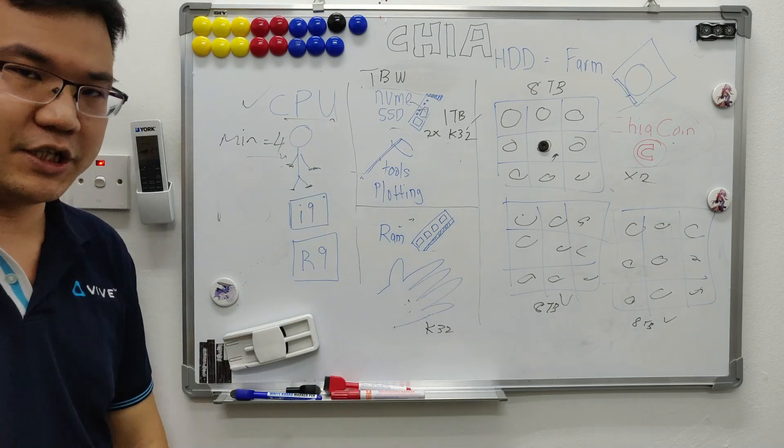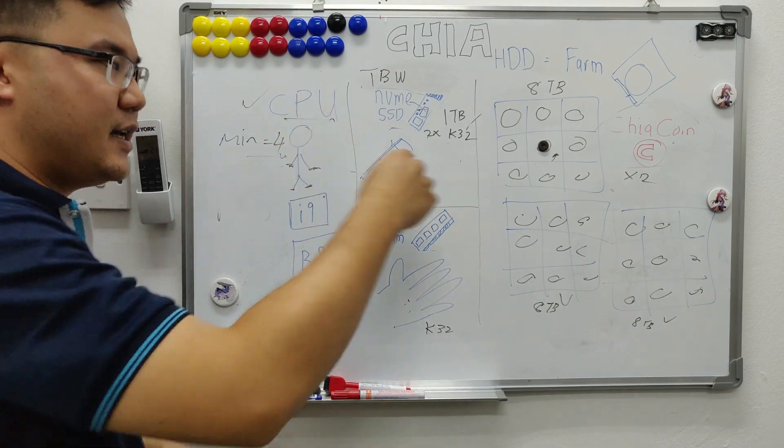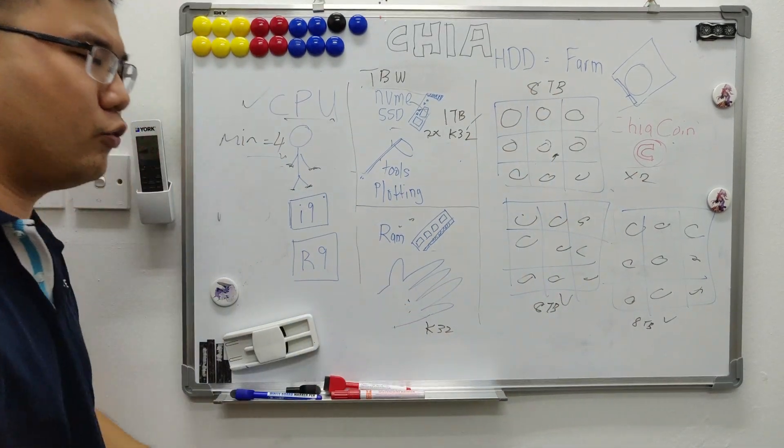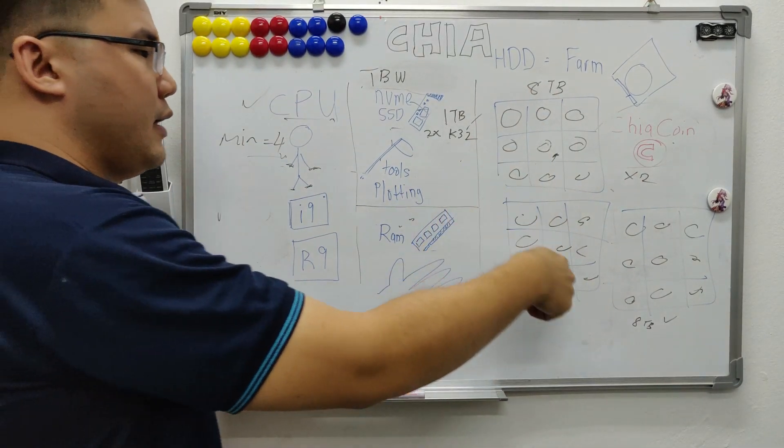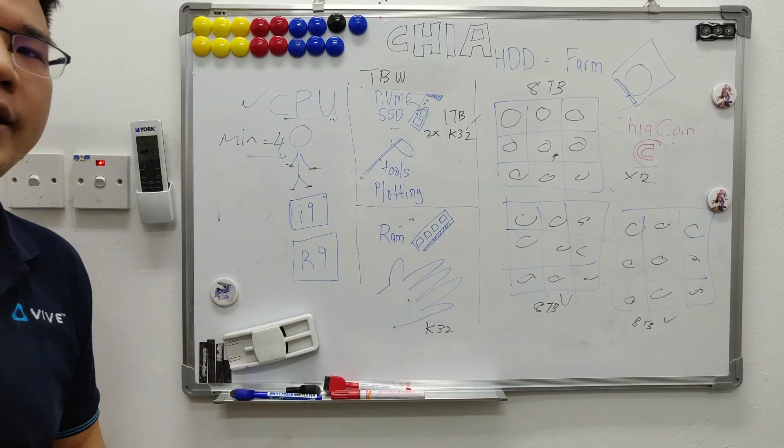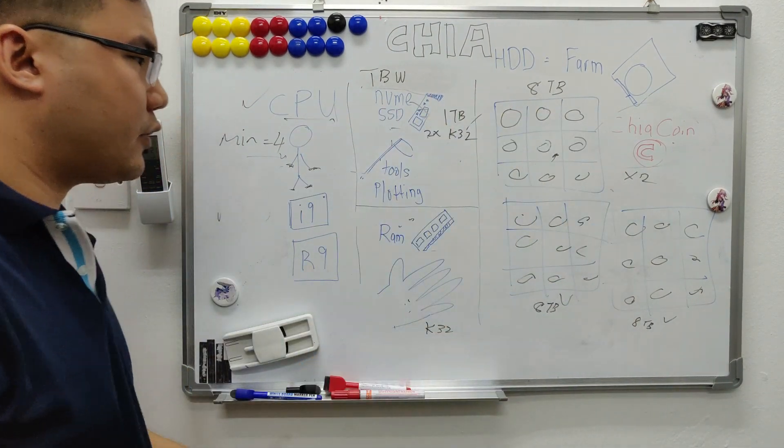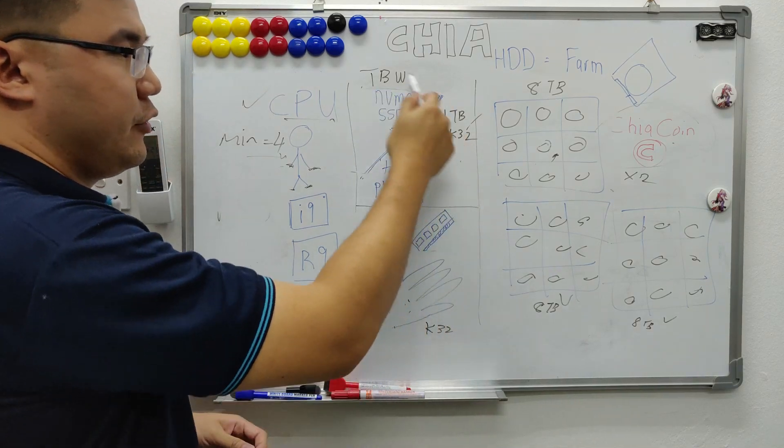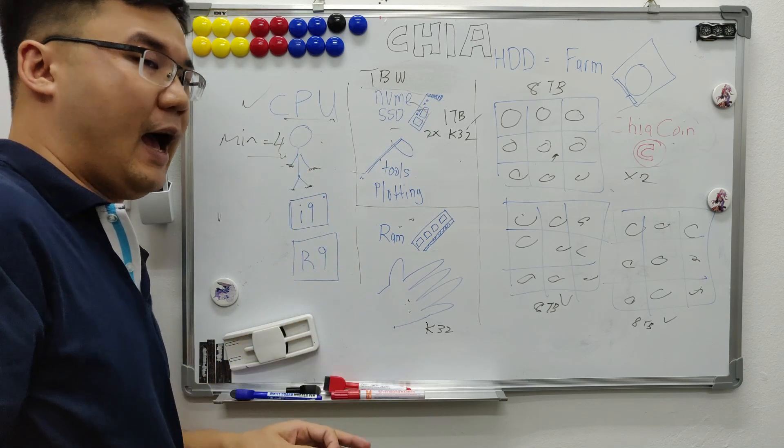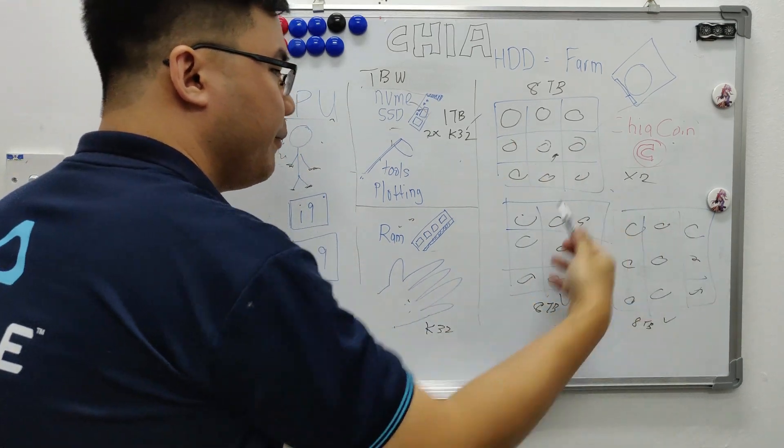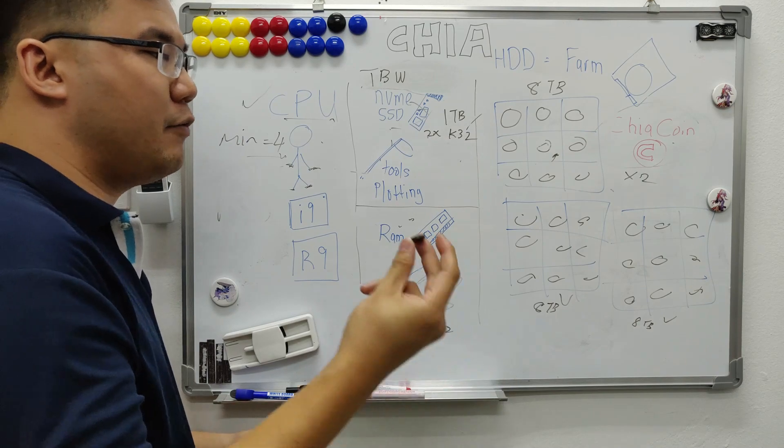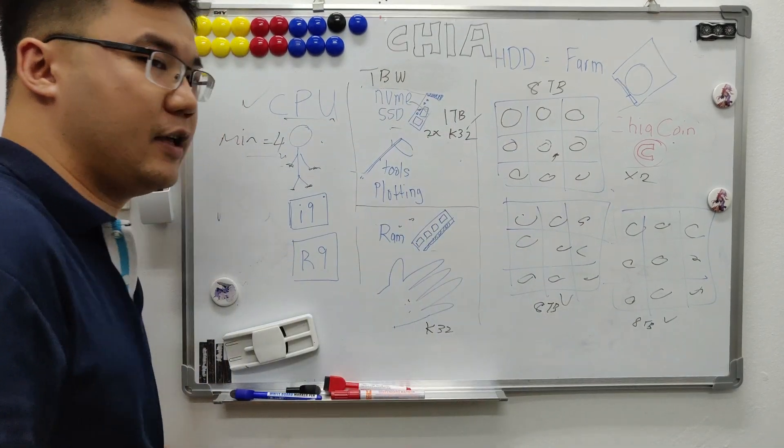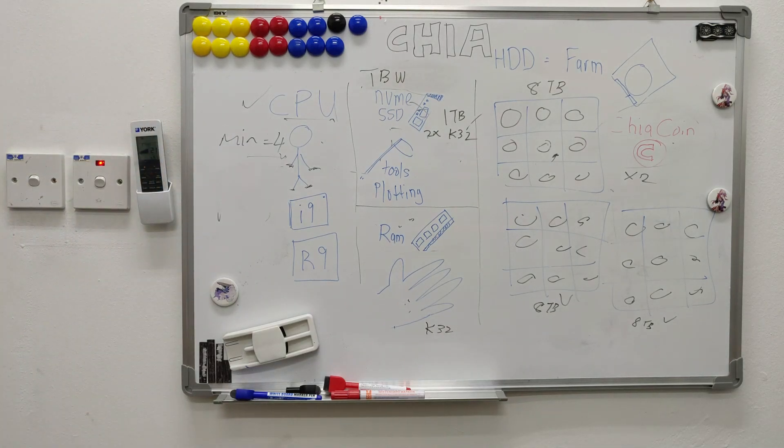But let's say today you have all this 8 TB. Let's say you have 32, so you have 24 TB of land prepared by your PC. So once prepared, you wouldn't need your NVMe to work anymore. And your CPU will be idle because all these farms are prepared. So what it will do? It will slowly wait for the Chia to drop on one of the plots if you're lucky enough.